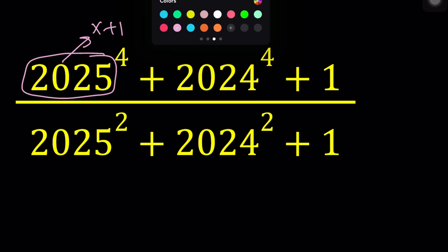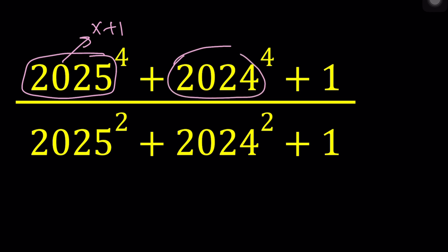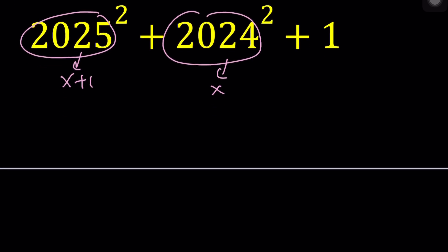So let's go ahead and call this x, and this will be x plus 1, and of course this is x plus 1 and this is x. One is going to stay as is, so now we have the following.